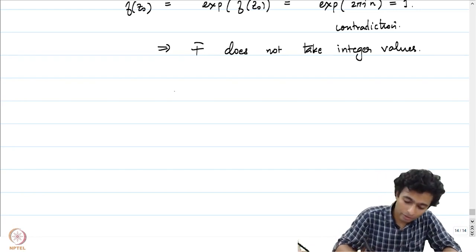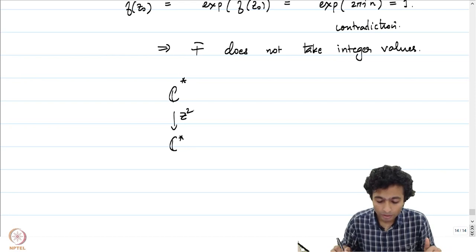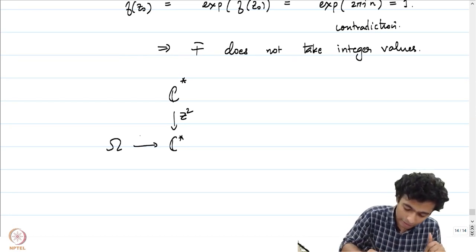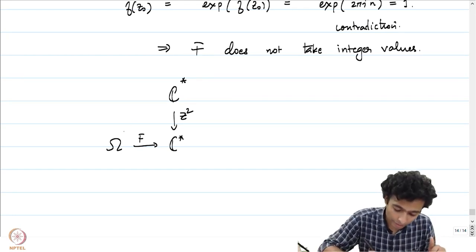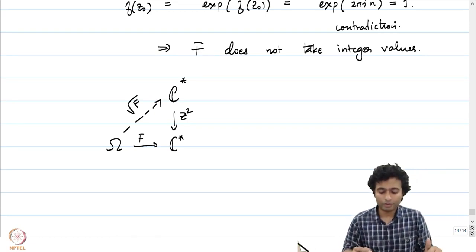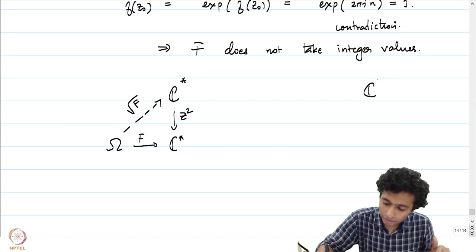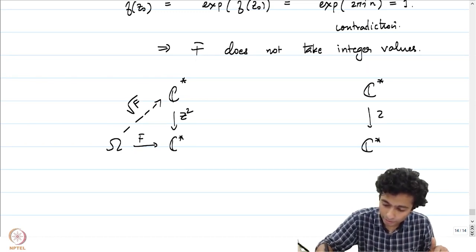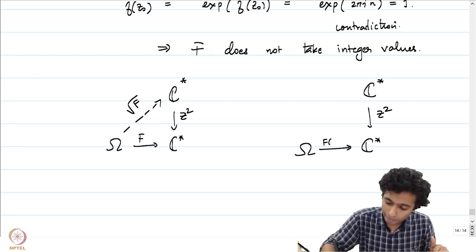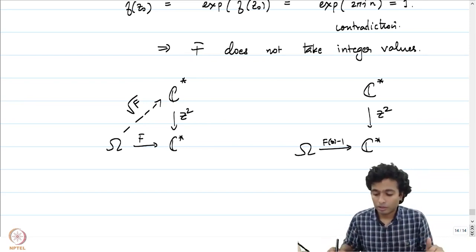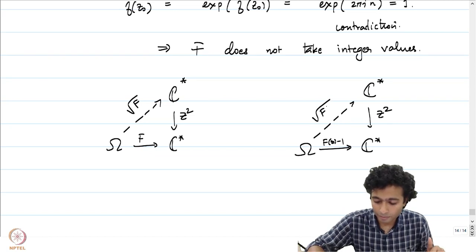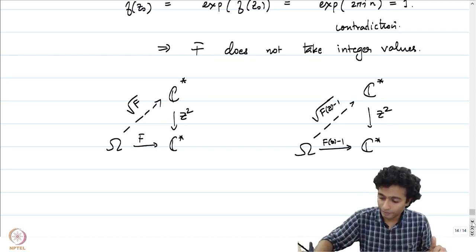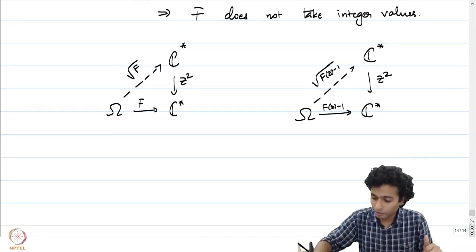In particular we have now two maps: a map from C* to C* given by z going to z², which is a covering map, and we have omega to C* given by capital F. Since F does not take integer values, in particular F does not take the value 0. We have a lift which I am going to denote by square root of F — it is actually the branch of the square root function. We also look at F(z) minus 1: this is also a map into C* because F does not take any integer values, so in particular it is not going to take the value 1 either. Therefore we have a lift: square root of F(z) minus 1. We now have two holomorphic functions: square root of F and square root of F minus 1.